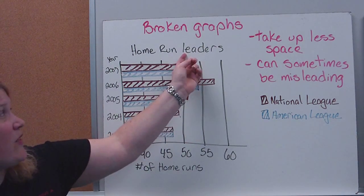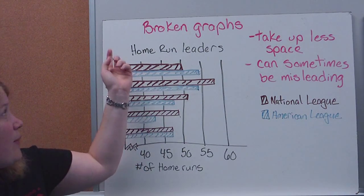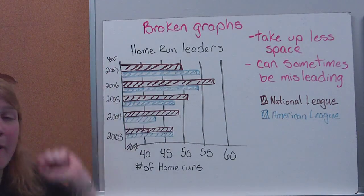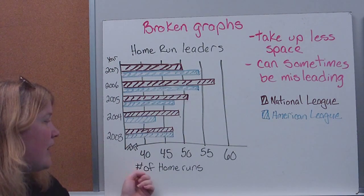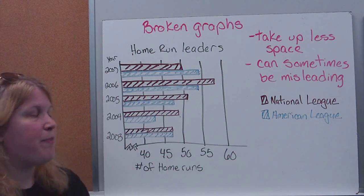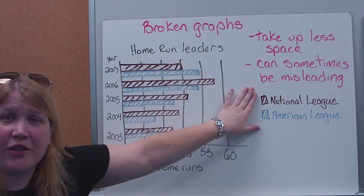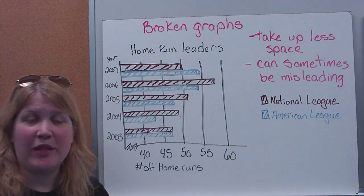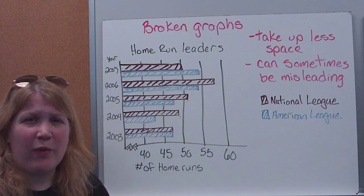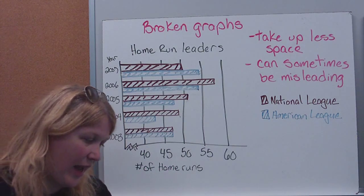Ideally a graph should start at zero and work up by fives or whatever interval you pick, whereas a broken graph starts at a chosen number to conserve space. This graph has a title: 'Home Run Leaders.' On the y-axis I have the year — 2003 through 2007 — and on the x-axis I have the number of home runs in the season. We're looking at National League leaders versus American League leaders, with a key showing what each color represents.